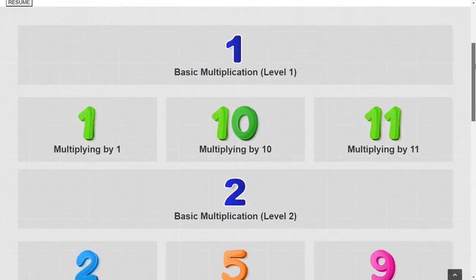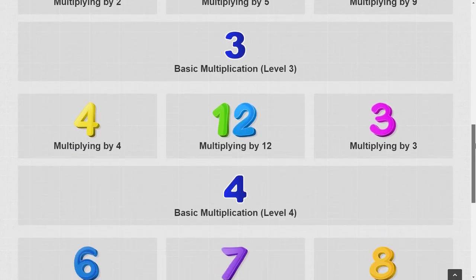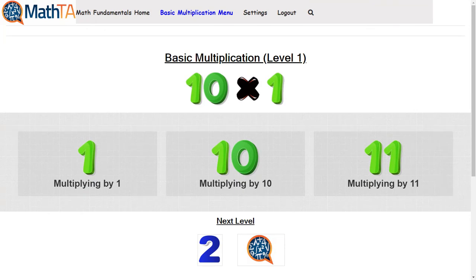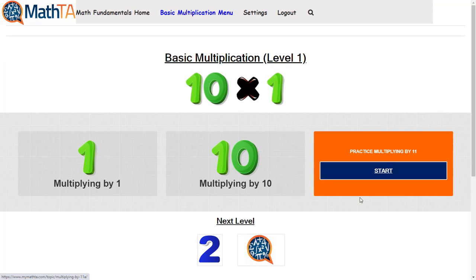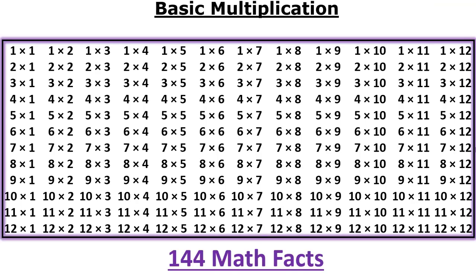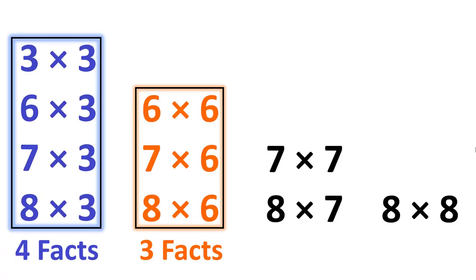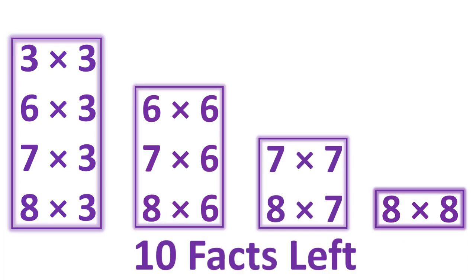The basic multiplication section is also organized into 4 levels with the easiest rules to learn and remember listed first. Instead of 144 multiplication facts, after learning 8 key rules, there are only 10 facts remaining.